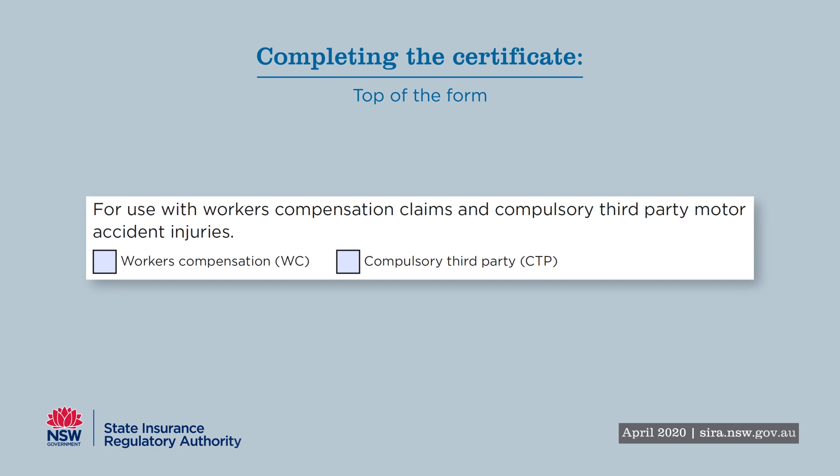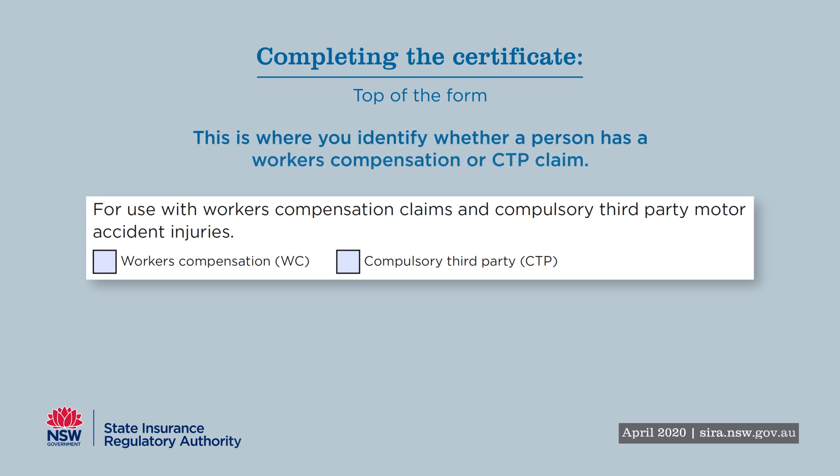The certificate is separated into four sections. At the top of the certificate, you firstly have to identify if the person has a claim for workers' compensation or CTP.